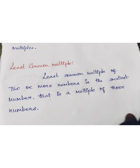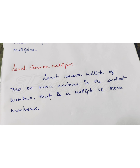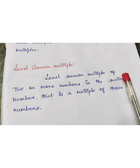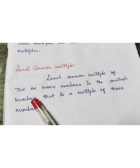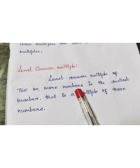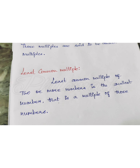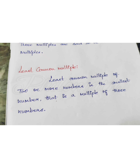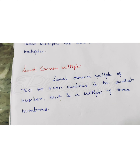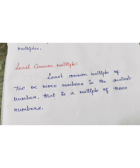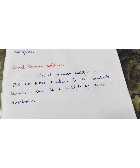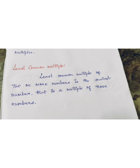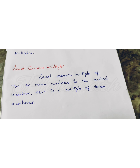The least common multiple of two or more numbers is the smallest number that is a multiple of those numbers. To understand in a better way, let us solve one example.